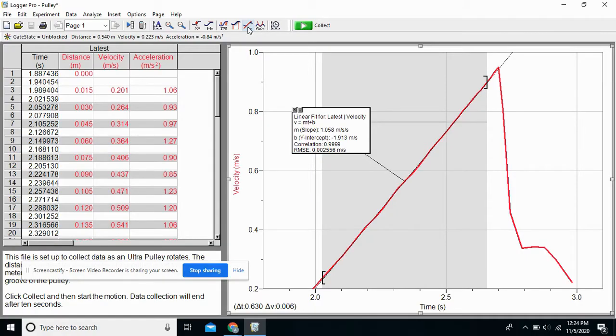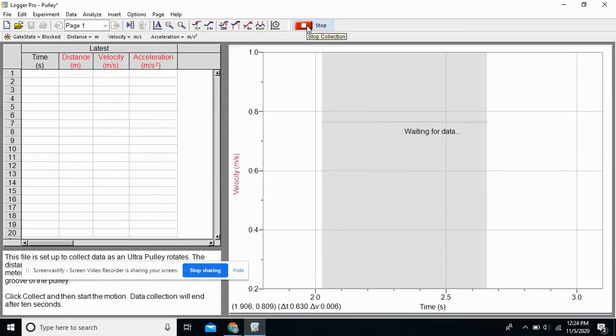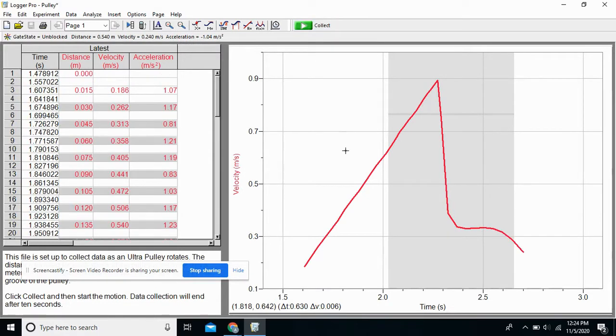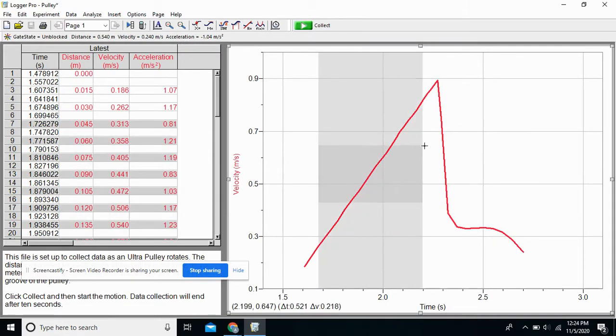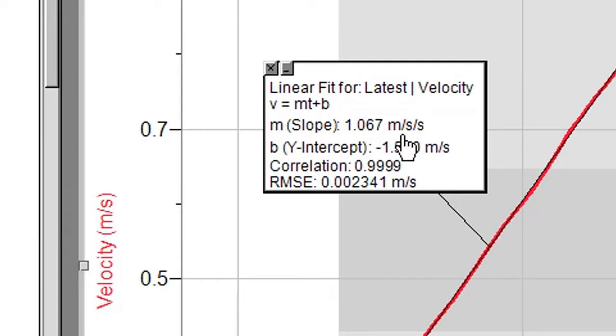Trial number two. All right. I'm going to highlight, take the slope of that line. Trial number two, 1.067. That's pretty close.